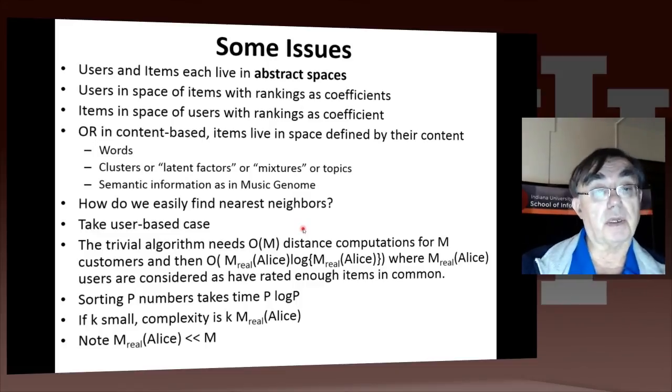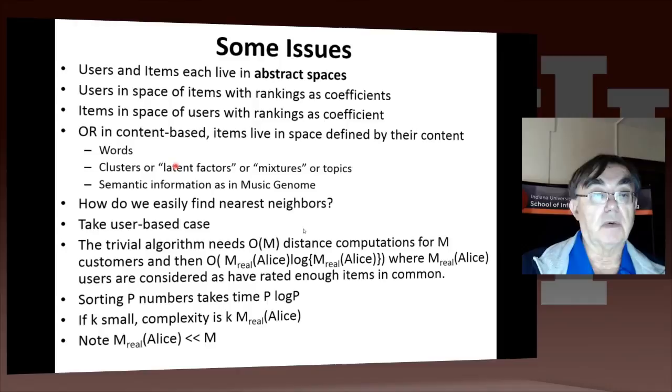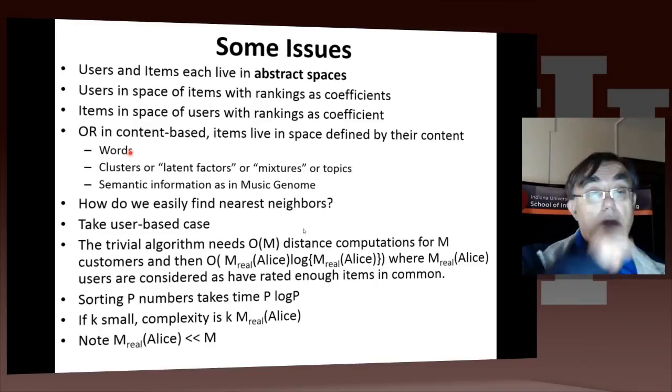Or we can do the property or content-based approach, where items live in the space defined by their content. This is the semantic information, like in the music genome, or words if you look at items as documents. Then we can do methods like clustering, which we will discuss later, or latent factors or mixtures of topics, which also identify things which are near each other. Those are the type of algorithms used by news-based websites, like Google News, which are trying to find news items which are near each other.